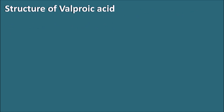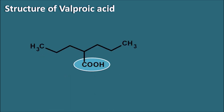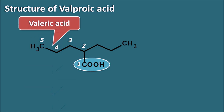Let us see the structure of valproic acid. It is a simple fatty acid with a carboxylic acid group. Starting the numbering from the carboxylic acid: one, two, three, four, and five — making it a five-carbon carboxylic acid. This is commonly called valeric acid, which is the common name of pentanoic acid.